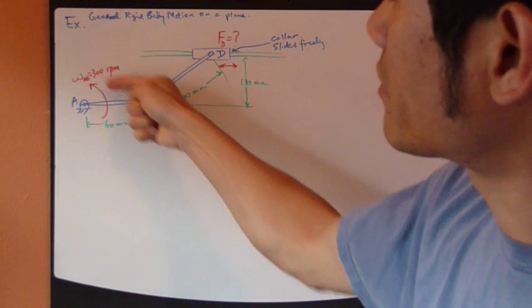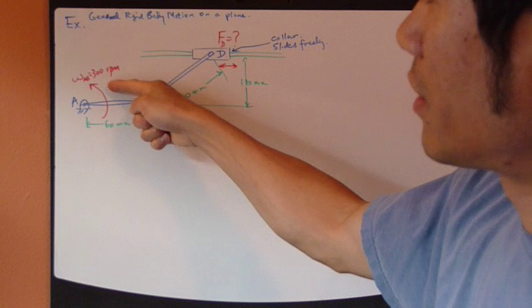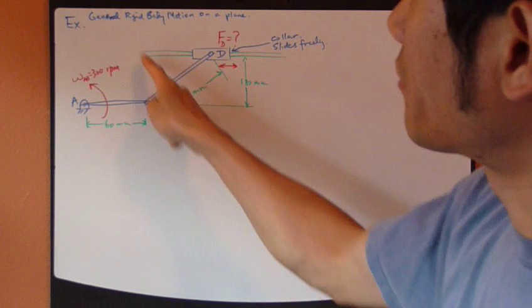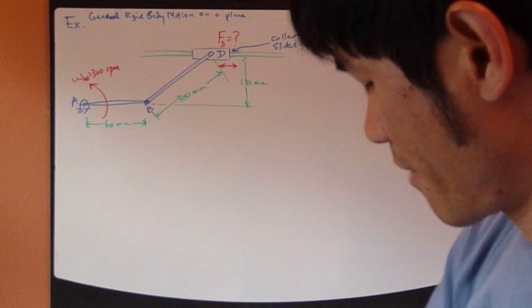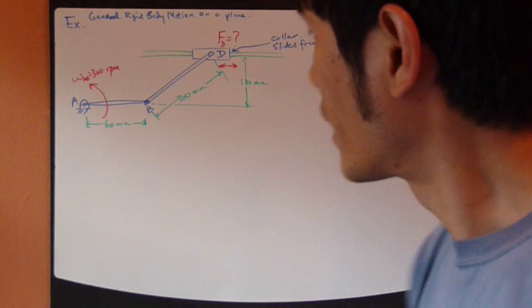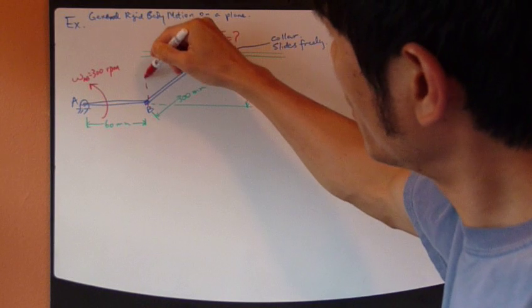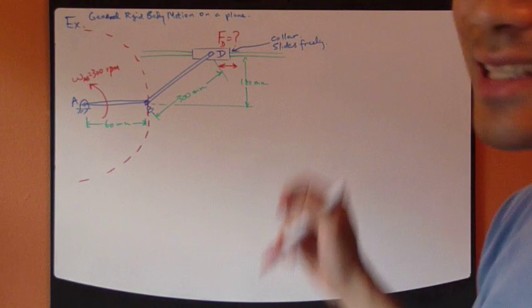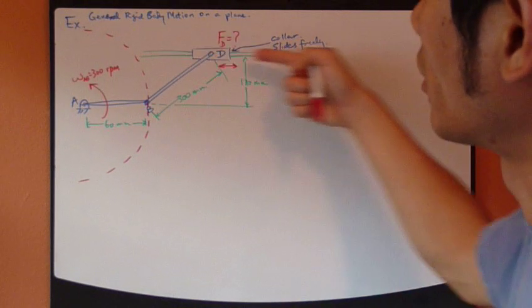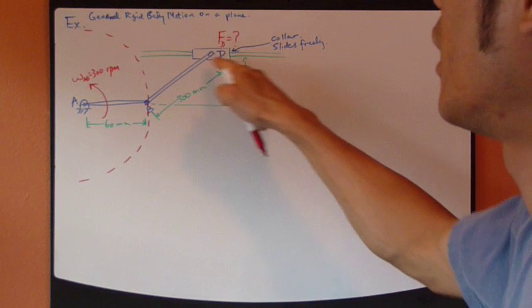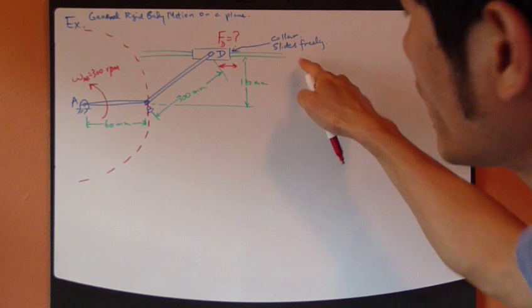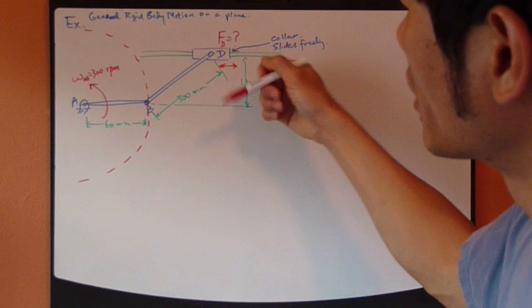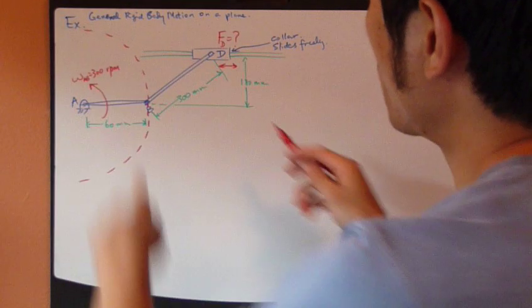So point B has to follow a circular path. Point B follows this path and it goes like this. Point D slides along this rod, a collar. It slides freely which means that friction is ignored.